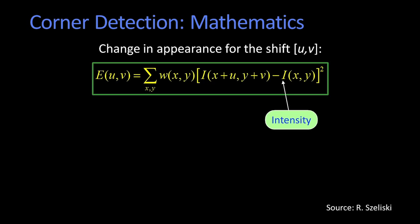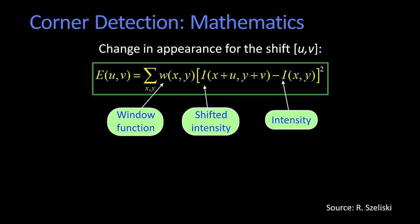So stepping through that, i is our image intensity. So i of x, y is just the original image. The u and the v is some small shift. So if I were to pick up my window and move it over a little bit, I would now get some different image, just shifted by a little bit. I subtract them and square them. And then I'm going to sum them up over some window.